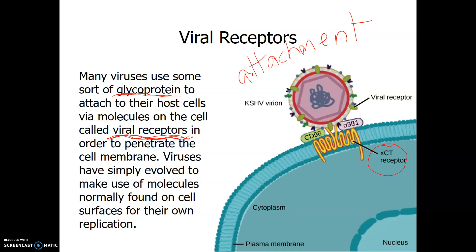Viruses have simply evolved to make use of molecules normally found on cell surfaces for their own replication — they've learned to use host cells in order to replicate since they can't do it on their own. The viral receptor is actually a glycoprotein, and the receptor on the host cell which the virus attaches to is called the cell receptor. This particular virion shown is called the KSHV virion.